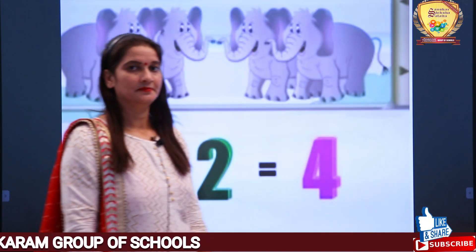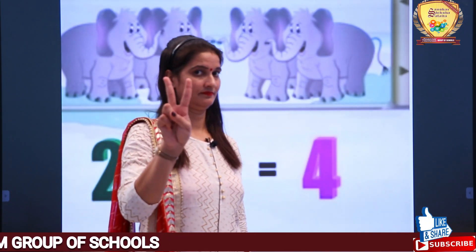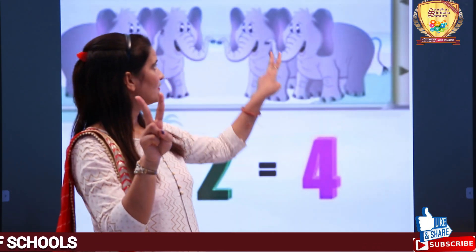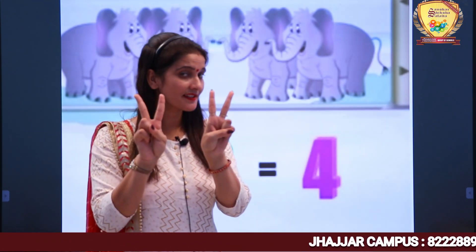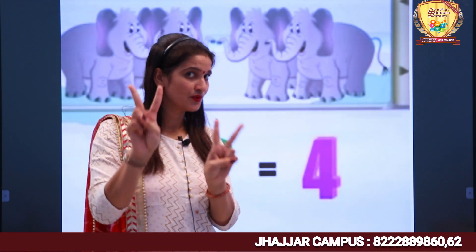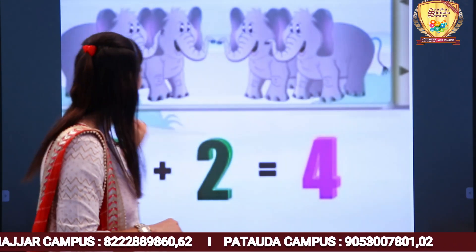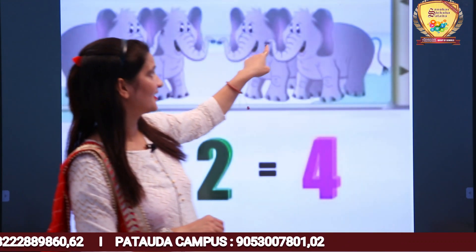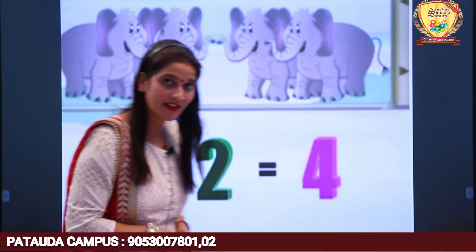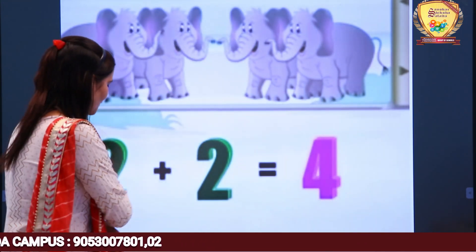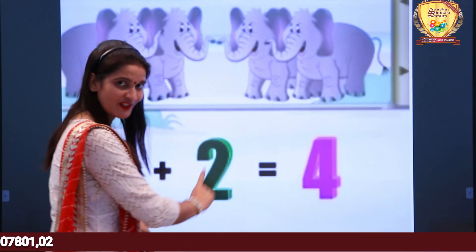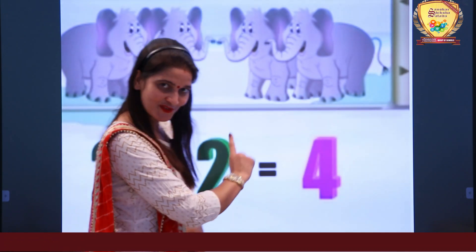There are 2 elephants. Then 2 more friend elephants came. How many elephants are there now? 2 plus 2 — 1, 2, 3, 4. So 2 plus 2 is equal to 4.